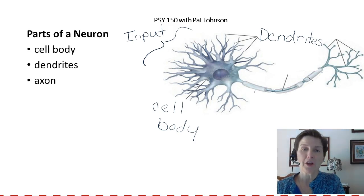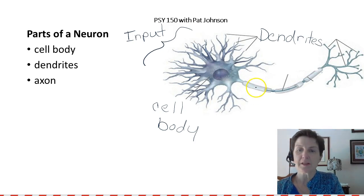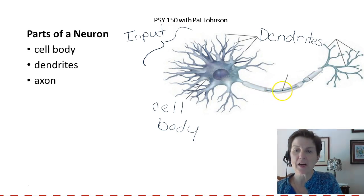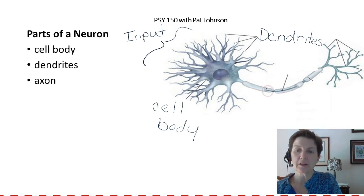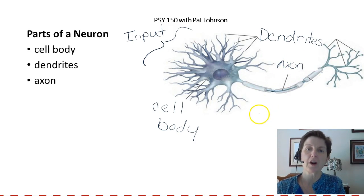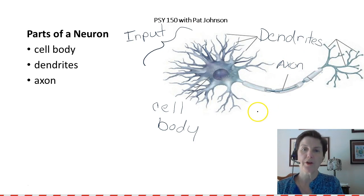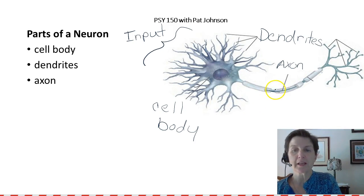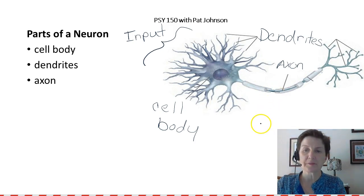If you're a giraffe, you have single-cell neurons that are even longer. And that's because this part, the axon, which is right in the center here, is what's so long. All of these axons together are what form a nerve. So remember, lots of neurons form a nerve, and it's this part — the axon.